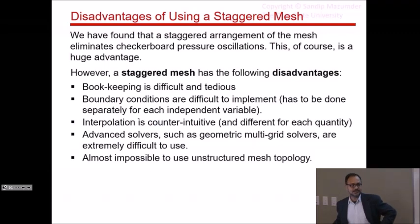But of course, it has many disadvantages, and that's why staggered mesh is no longer used today, although it was used in the early days of CFD. Number one, bookkeeping is difficult and tedious. For those of you who have started writing code, you already have seen that. Boundary conditions are difficult to implement. You have to do it separately for each independent variable. There is no unified treatment because once you staggered the mesh, you don't have U and V velocities at the same location. So the way you apply boundary conditions for x-momentum is different from the way you apply boundary conditions for y-momentum.